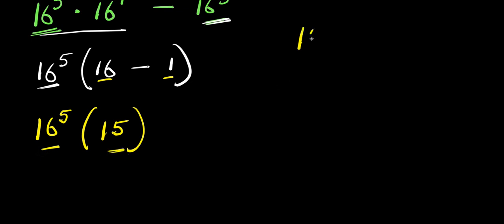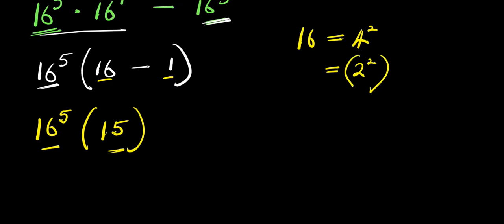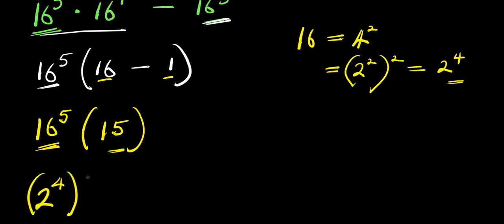Now, remember 16 is a perfect square, which is 4 to the power of 2. And this means we can express this as 2 to the power of 2 raised to the power of 2, because 4 is 2 squared. And this will give you 2 to the power of 4. So, 16 is 2 to the power of 4. So, we have 2 to the power of 4, raised to the power of 5, times 15.